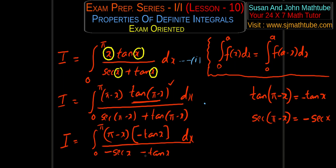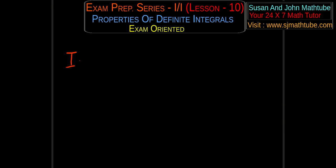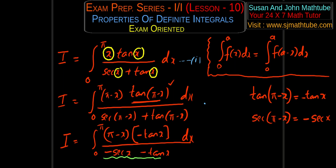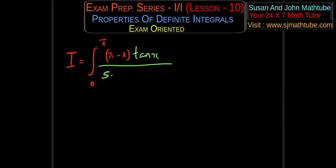In the denominator we have minus common — that's minus sec x minus tan x — and in the numerator we also have a negative. So both negatives make it positive. The result is I equals integral from 0 to π of (π minus x)·tan x divided by sec x plus tan x. Since we've simplified, we call this equation number 2.